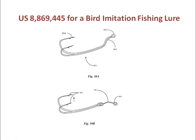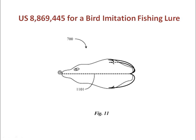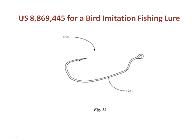Figure 10A and 10B illustrate perspective views of hooks. 10A is the hook of figure nine. Figure 10B is a perspective view of a cam-activated hook assembly. Figure 11 is a plan view of the lure body of the fishing lure. Figure 12 is a perspective view of a single shank hook useful in embodiments of the invention.